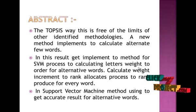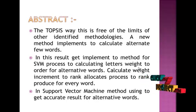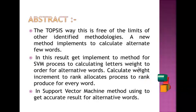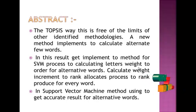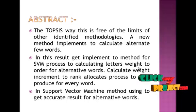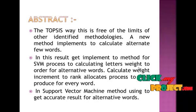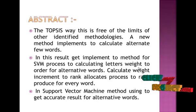The alternate few words approach gets synonymous answers to produce results — essentially synonymous words. Also, four companies are evaluated to calculate the best result and rank the next company. The SVM process calculates the letter weight in order for alternative words. Calculating weight increases the rank allocation process to produce a rank for every word. In the support vector machine method, accurate results are generated for alternate words, and the SVM method gets alternate weights for our result process, getting alternate results for every user and every synonymous term.